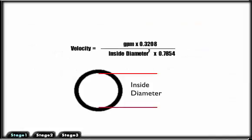Velocity is the distance of fluid travels per unit of time. With a fixed volume of fluid going through a conductor, the velocity of the fluid will depend upon the inside diameter of the conductor.